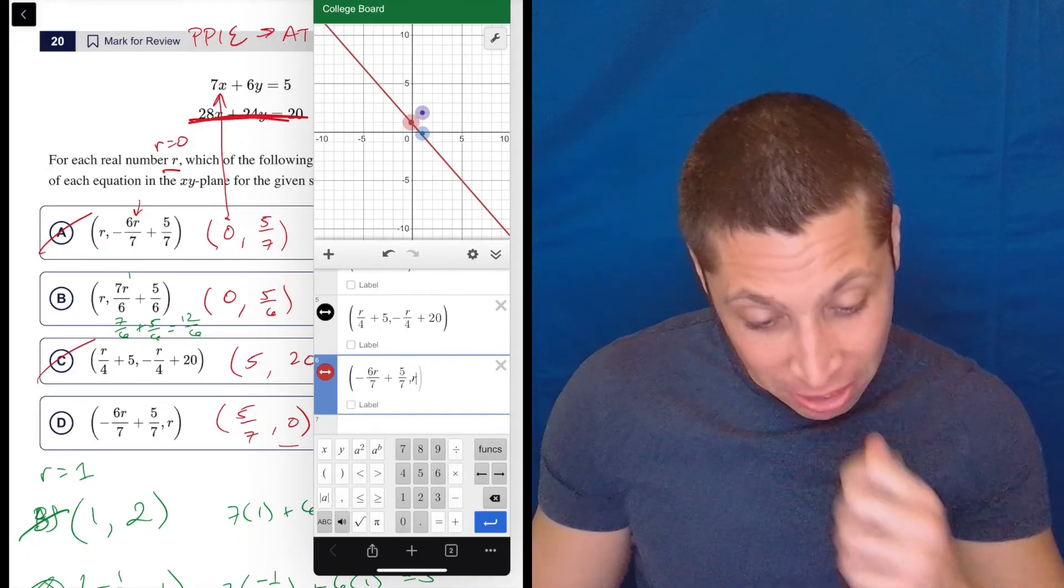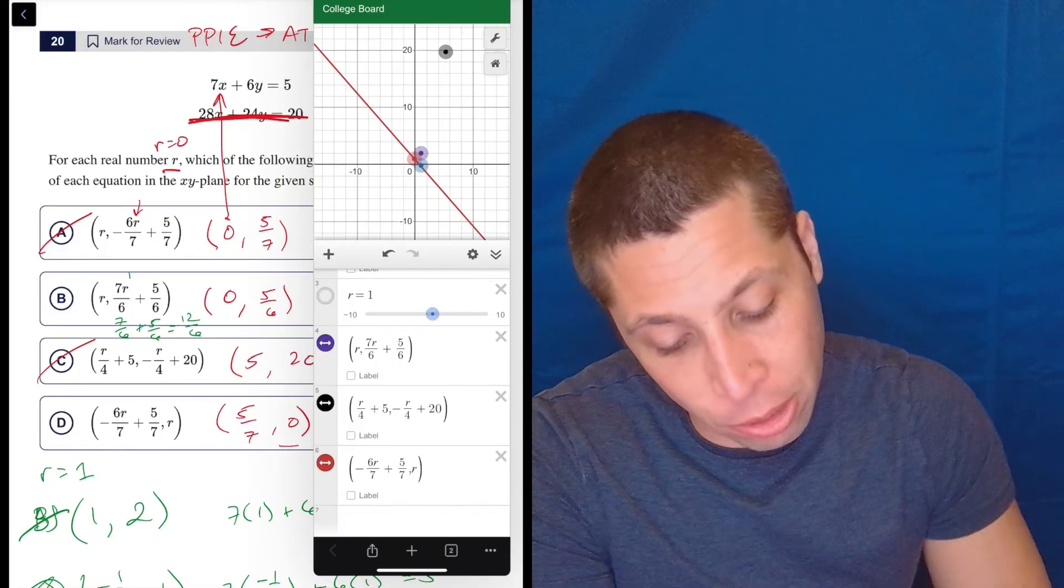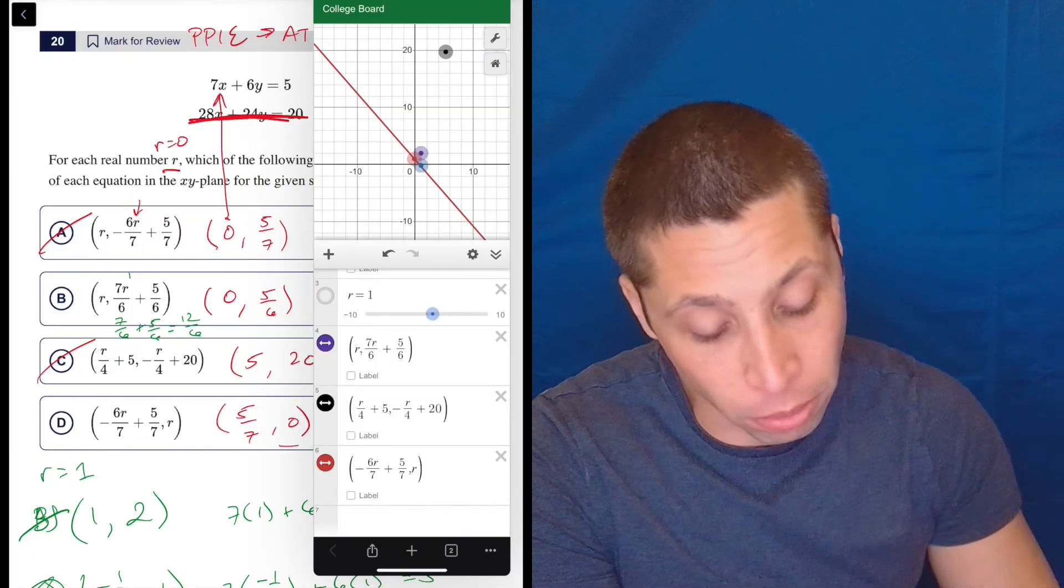And now we have a bunch of dots. There's one hidden over there. And you can see some of them are not even on the line.